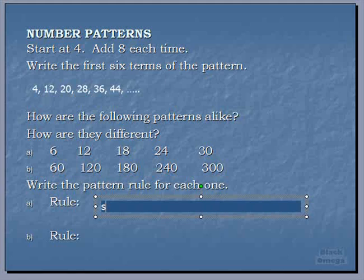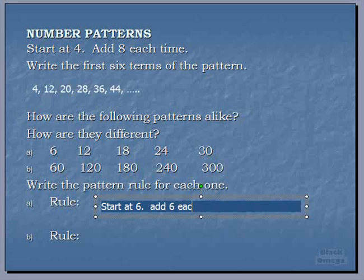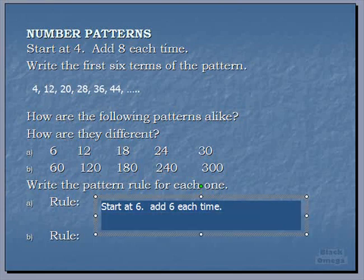We said it starts at 6, and what do we do after that? We add 6 each time. Good. So that's what we have to do for that one: start at 6, add 6 each time, and that's how we get our pattern.